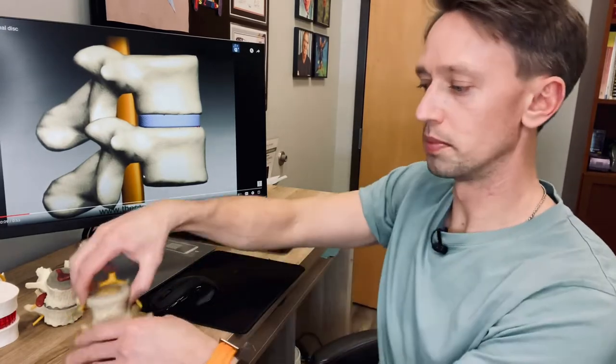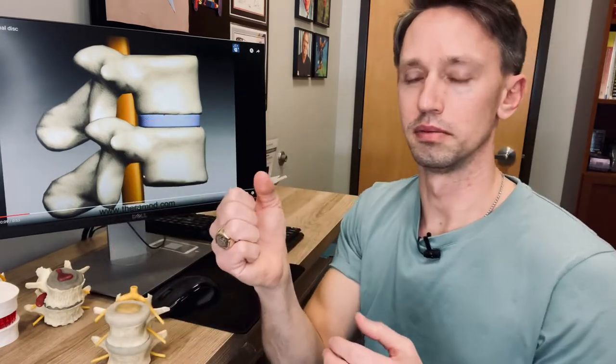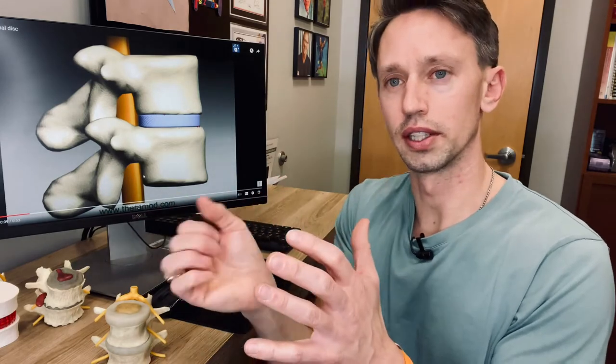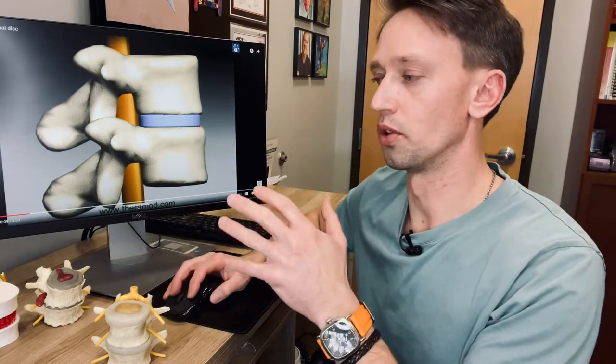there's movement happening at the vertebra and that motion is creating a positive or negative pressure in the disc. When that happens, like a sponge, when you squeeze a sponge, water goes out. When you let go, it creates a negative pressure and water comes back in. The same thing happens with the disc with normal motion.